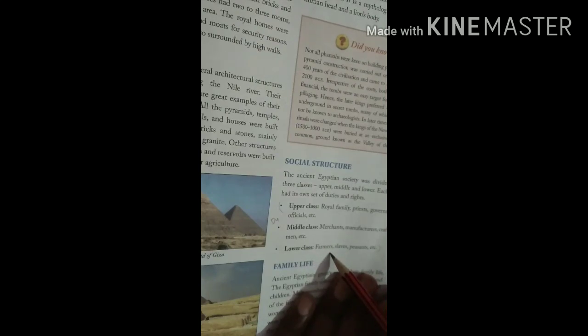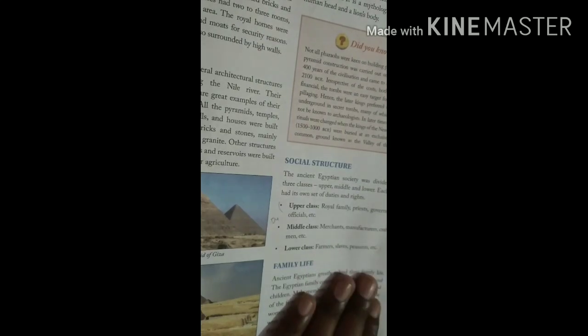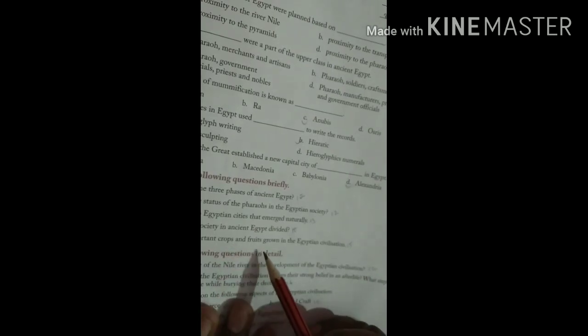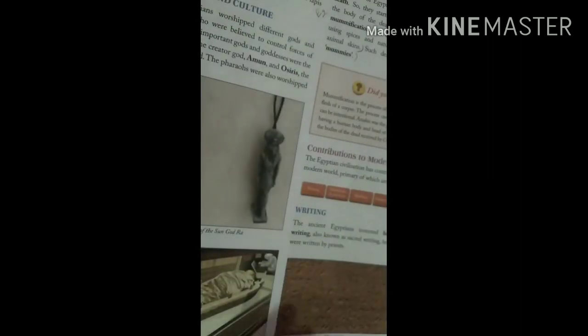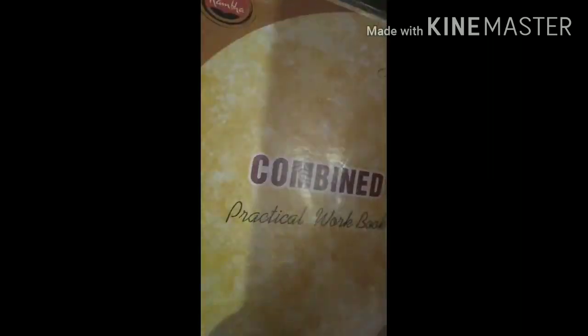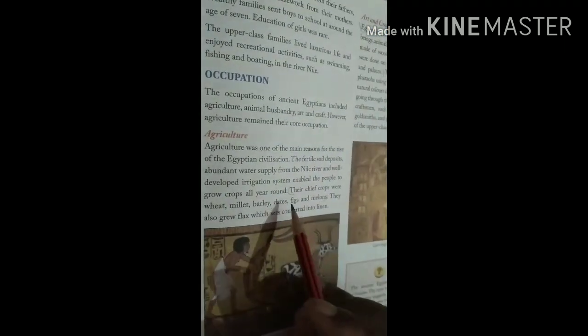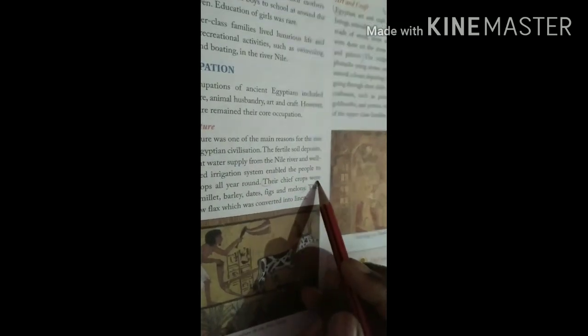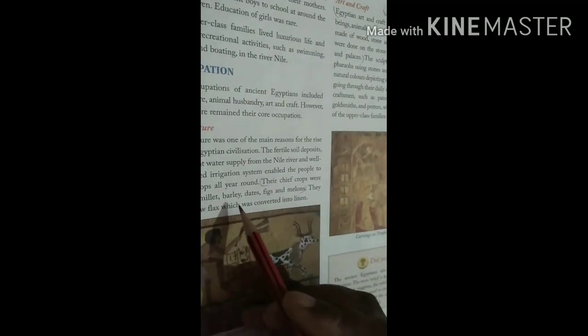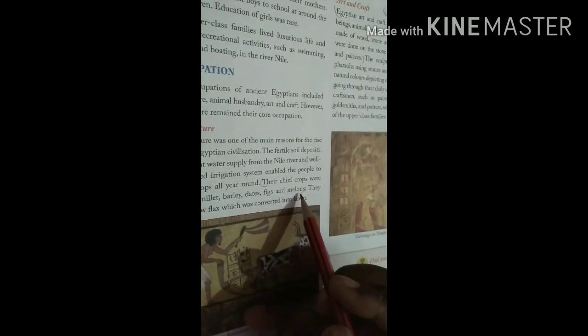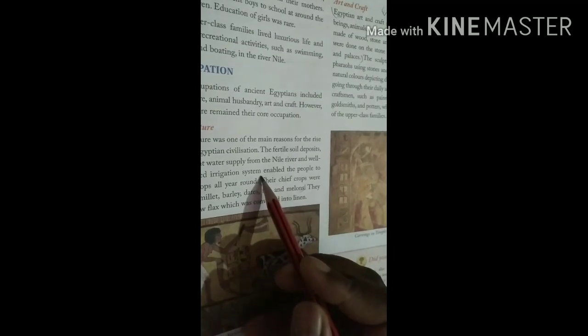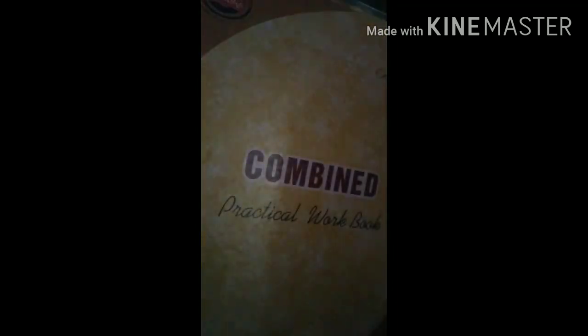Now come to question number five. List some important crops and fruits grown in the Egyptian Civilization. This is on page number fifteen, agriculture heading. Some important crops were: wheat, millet, barley, dates, figs, and melons.